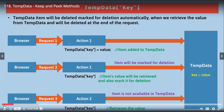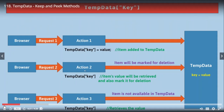For example, we have sent request 1 to action 1 and stored some value in TempData: TempData["x"] = 100. In request 2, we retrieve the value from TempData, and the item is automatically marked for deletion — so at the end of request 2, TempData["x"] is deleted. When request 3 is sent to action 3 and tries to access TempData["x"], it is no longer available. This is the default scenario when working with TempData.